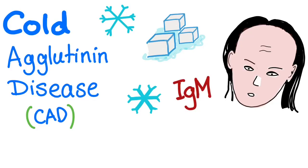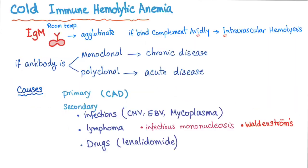Autoimmune hemolysis has two subtypes: the warm, discussed in the previous video, and the cold — today's topic called cold agglutinin disease. It involves IgM autoantibodies, and red blood cells coated with IgM autoantibodies at room temperature or below will agglutinate. If they bind complement and fix it avidly, it results in intravascular hemolysis. If the antibody is monoclonal it's usually a chronic disease; if polyclonal, it's an acute disease.